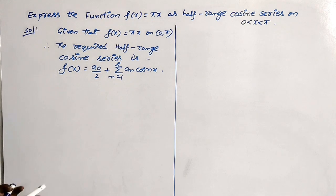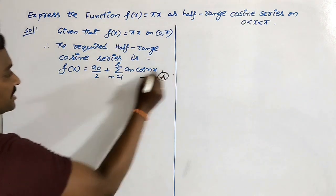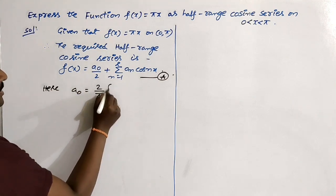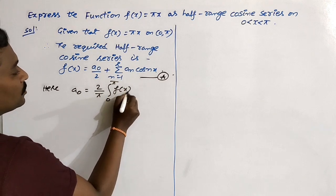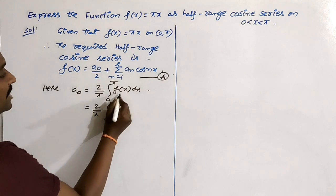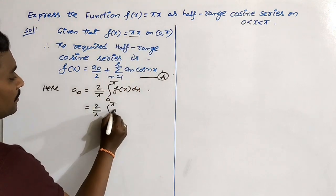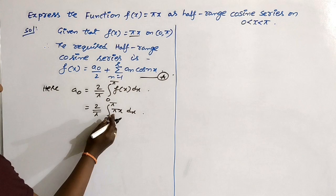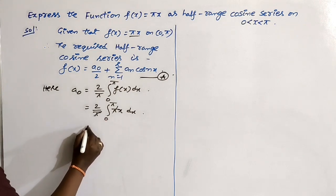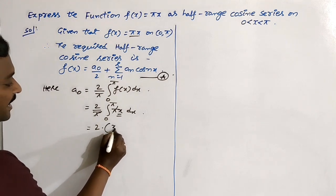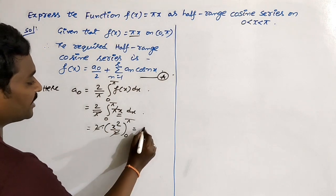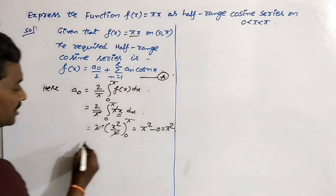This is equation number one. The formula for a₀ is equal to (2/π)·∫₀^π f(x) dx, which gives (2/π)·∫₀^π πx dx. Observing that π is a constant and we have (1/π) outside, so the π's cancel. The integration of x is x²/2, evaluated within the limit 0 to π.